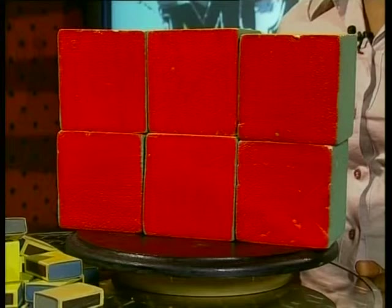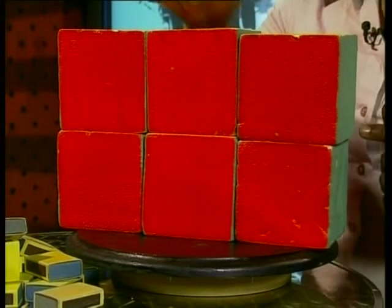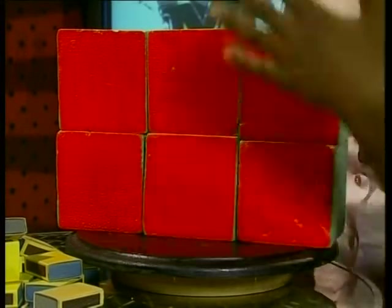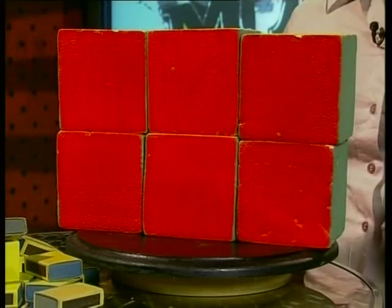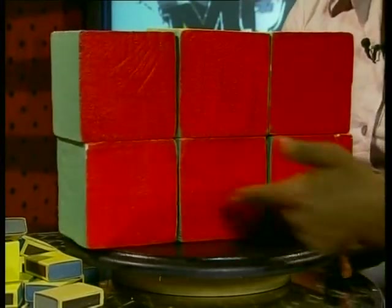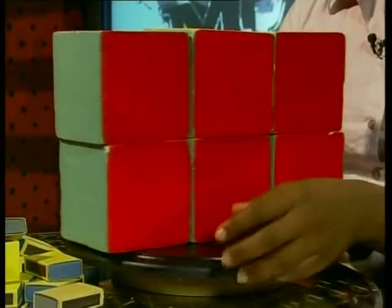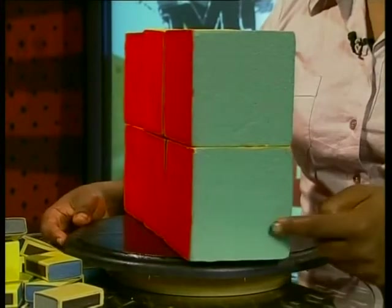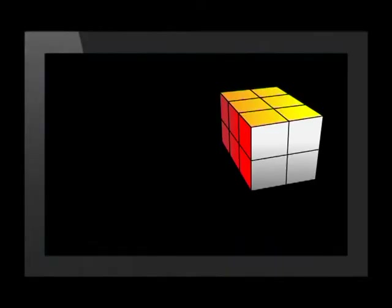There are 3 here on top and another 3 underneath, 6 on each of these sides and 2 on either end. That makes 12 plus 6 plus 4 square units, which comes to 22 square units.